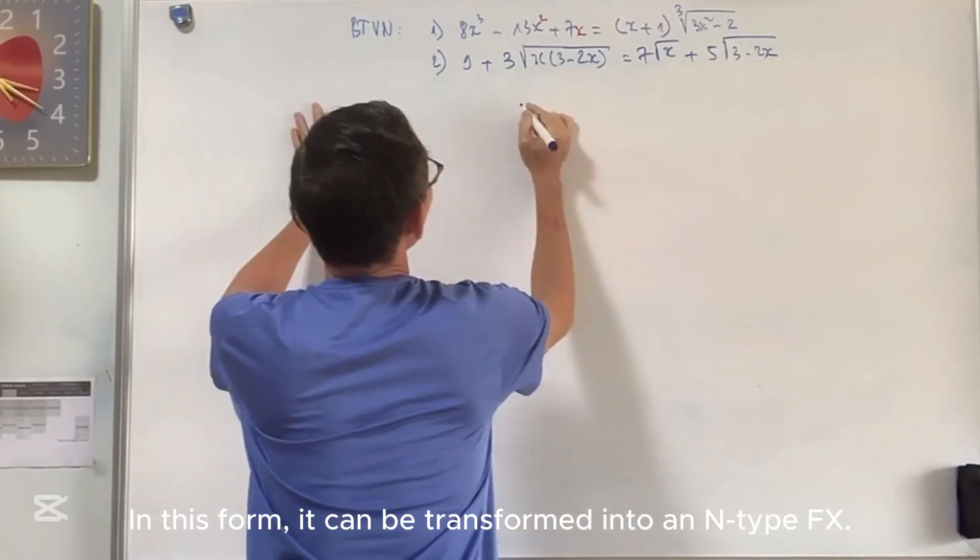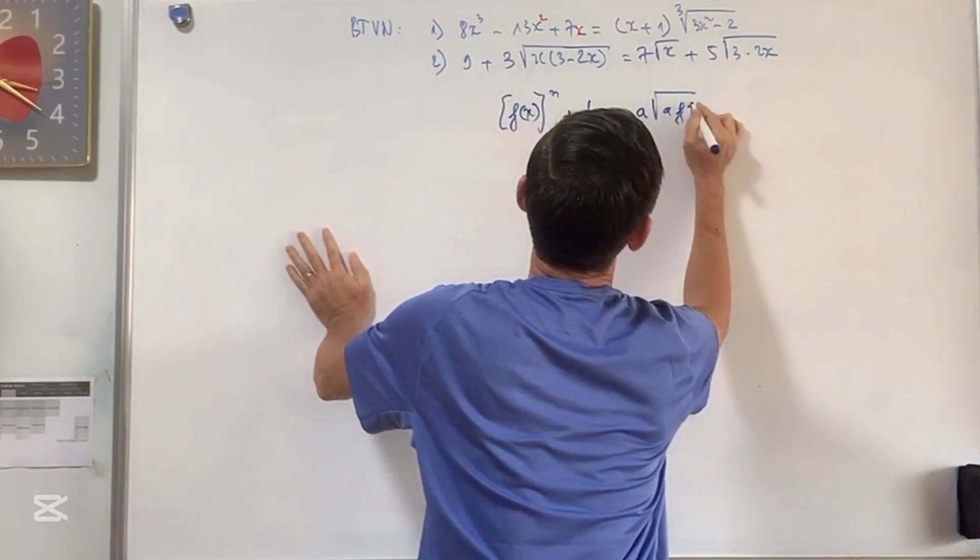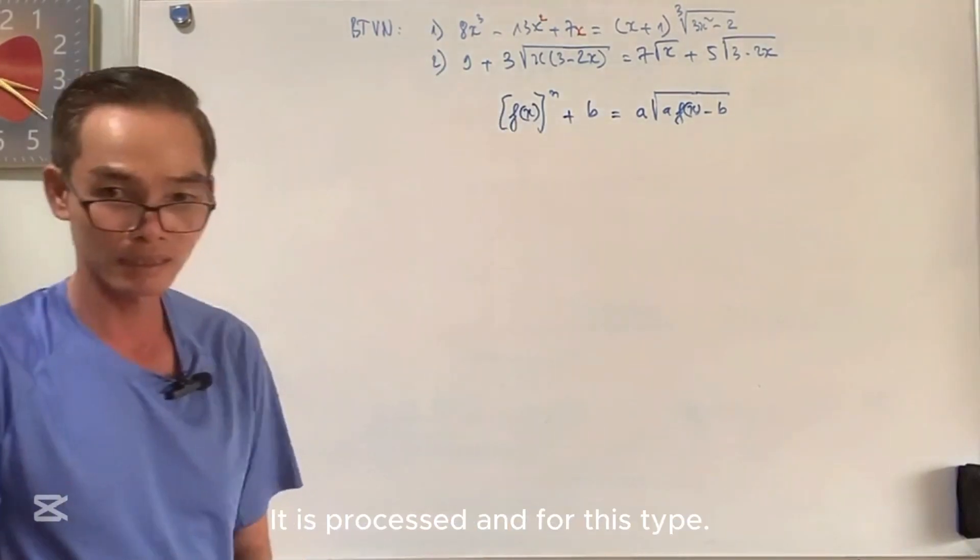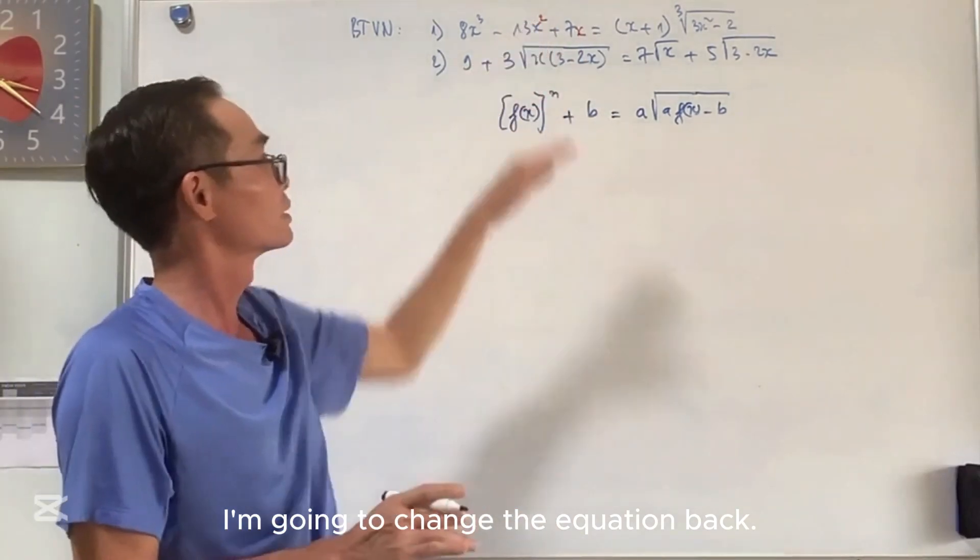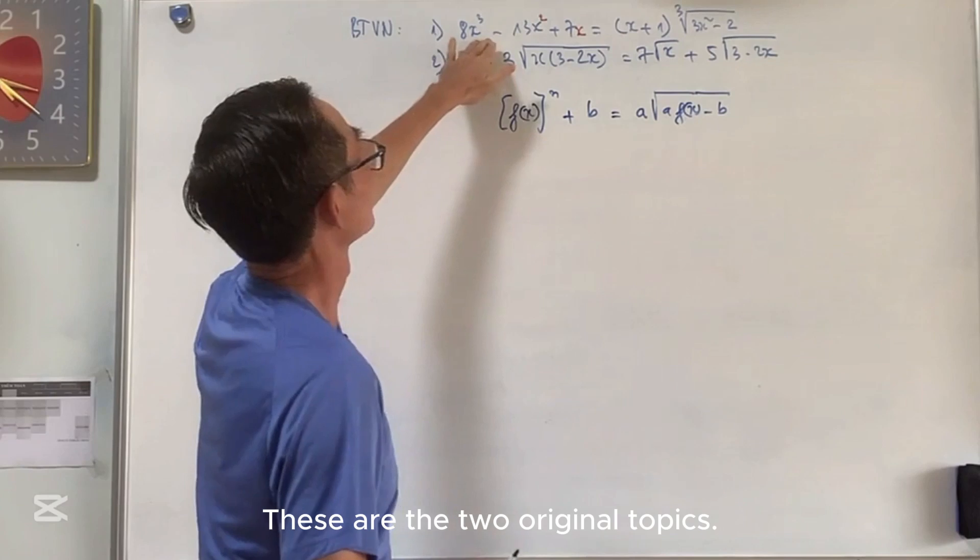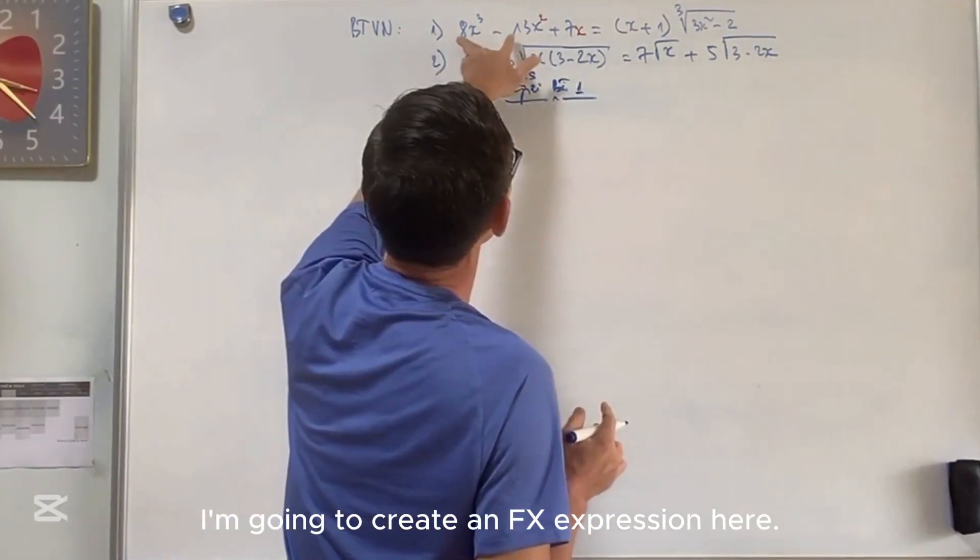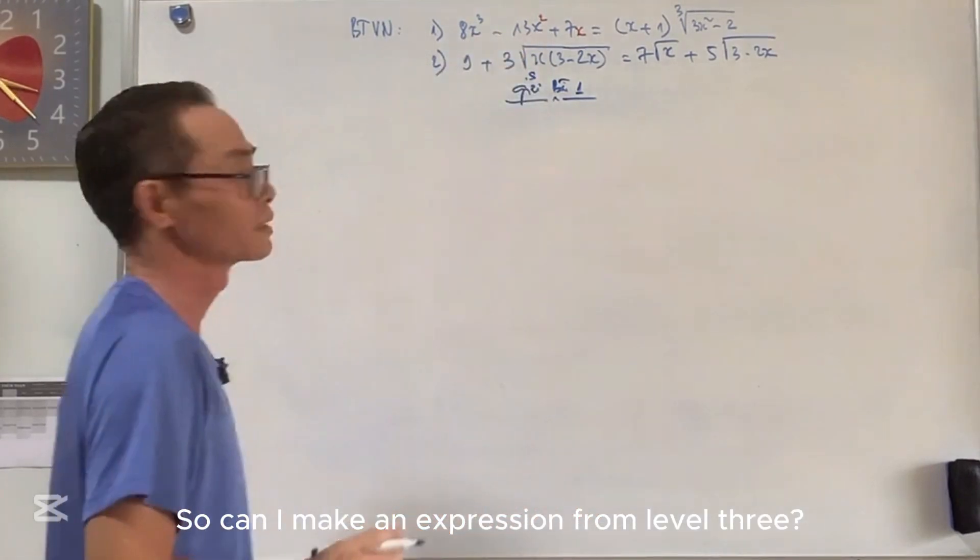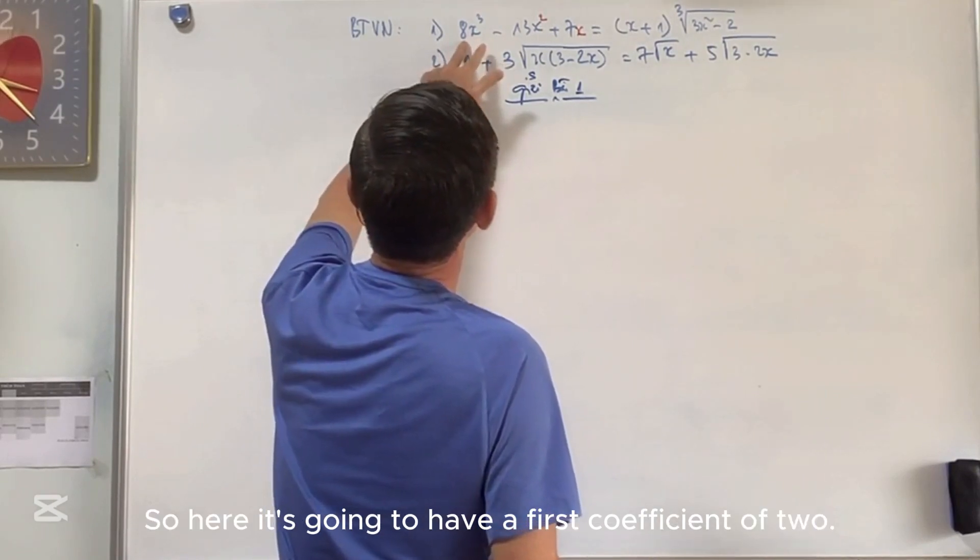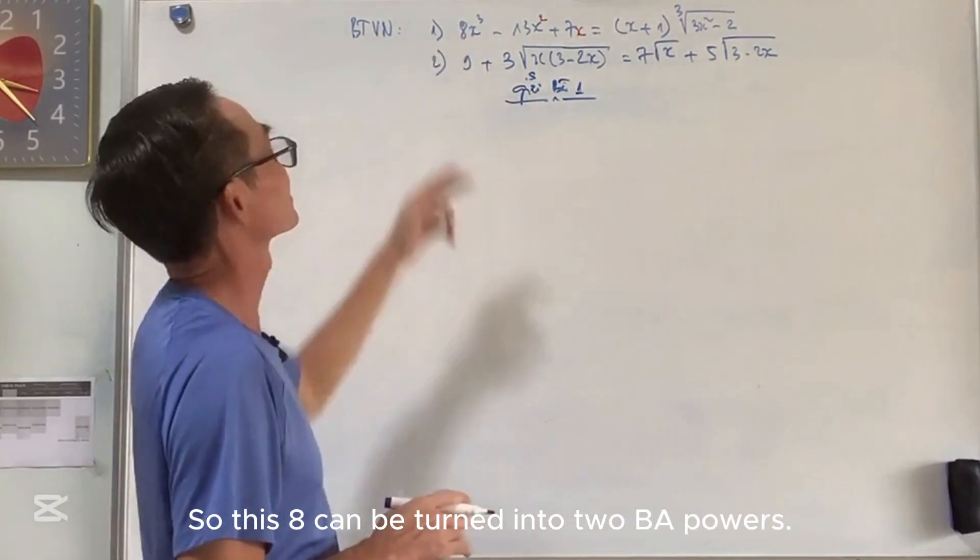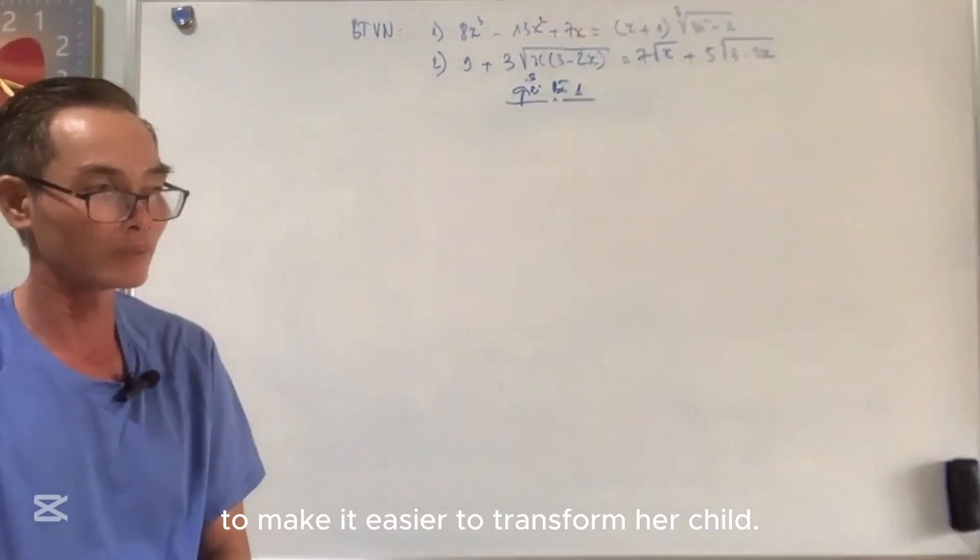There are two articles in this section that I will cover. Number one, recognize what kind of equation it is. In this form, it can be transformed into an N-type fx plus b equals a times the root of a times fx minus b, where b can be a constant or as a processing expression. After doing a set, let's say a equals this and b equals this, I'm going to change the equation back to a symmetrical equation system. These are the two original topics. It hasn't shown me an expression like that, but I'm trying to do a transformation. Let's see if it has like that. Then you should choose a function as small as possible to make it easier to transform.